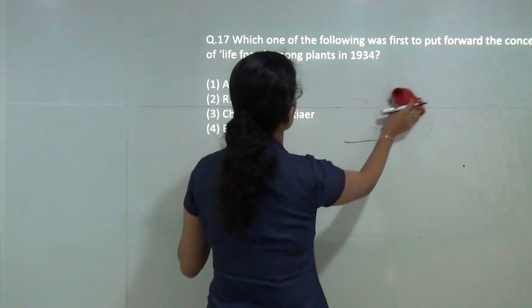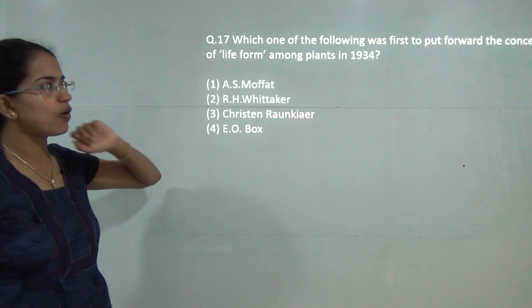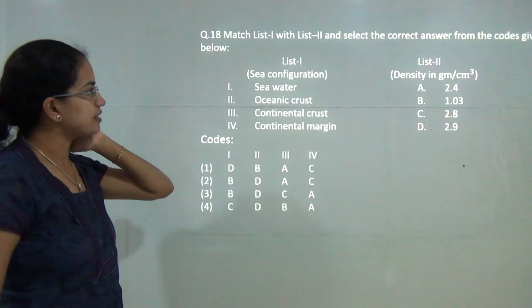Next question is who was the first to put the life form that exist in plants in 1934? It was Raunkiaer who tried to explain the life forms in plants in 1934. Raunkiaer is the correct answer here.